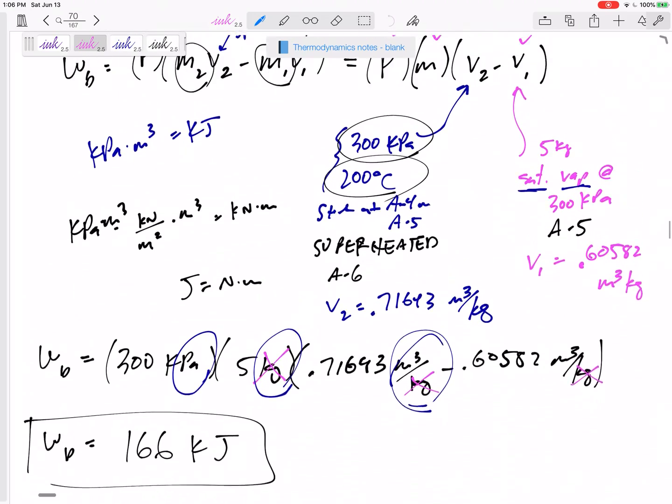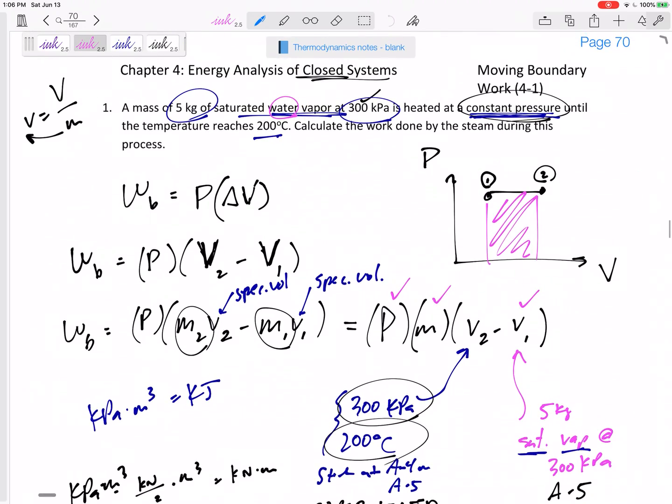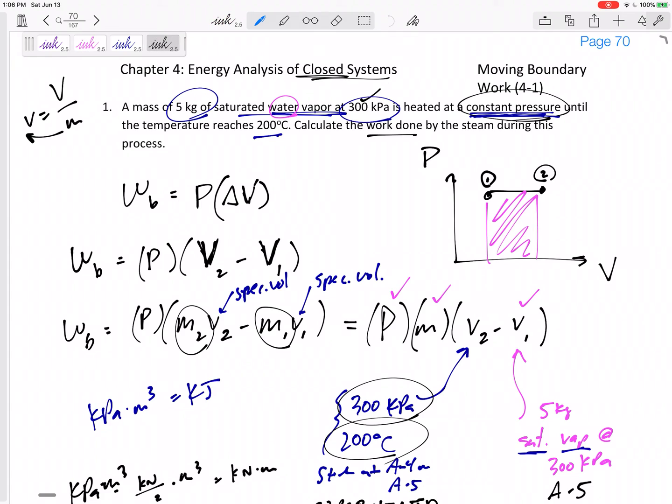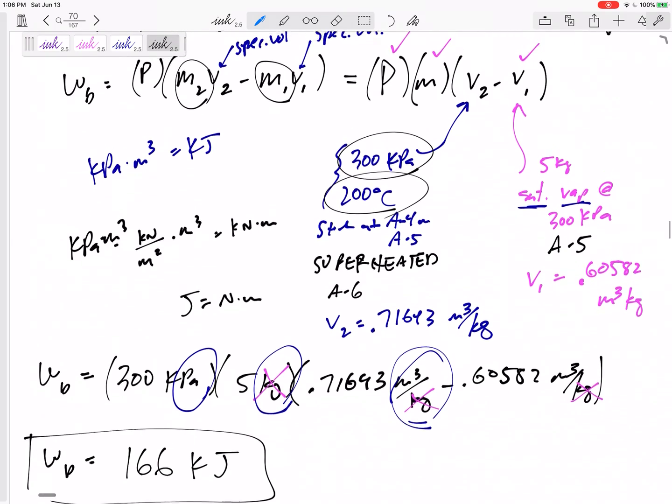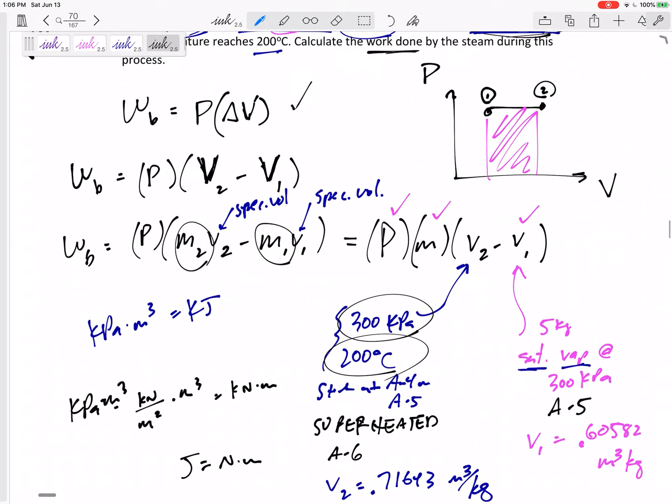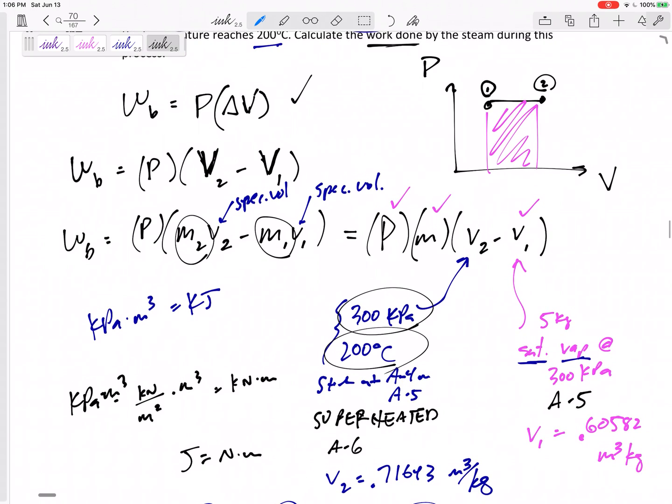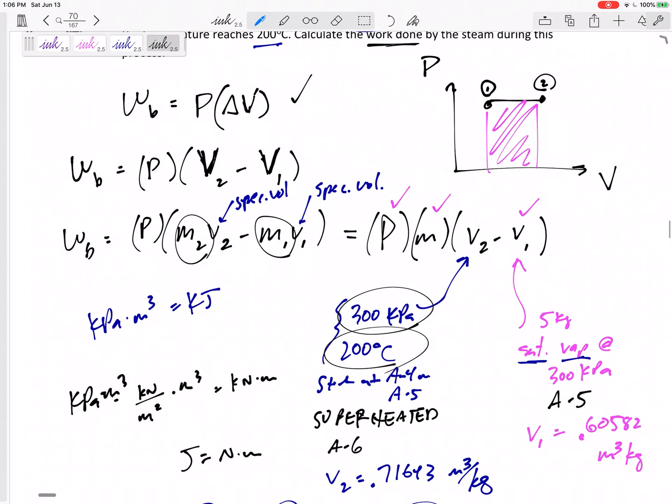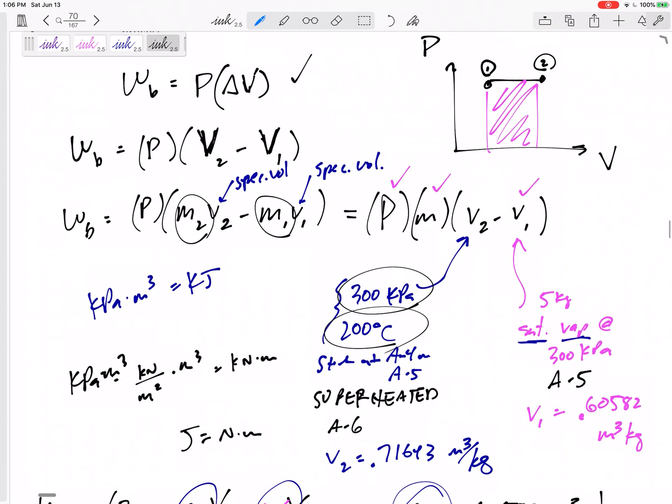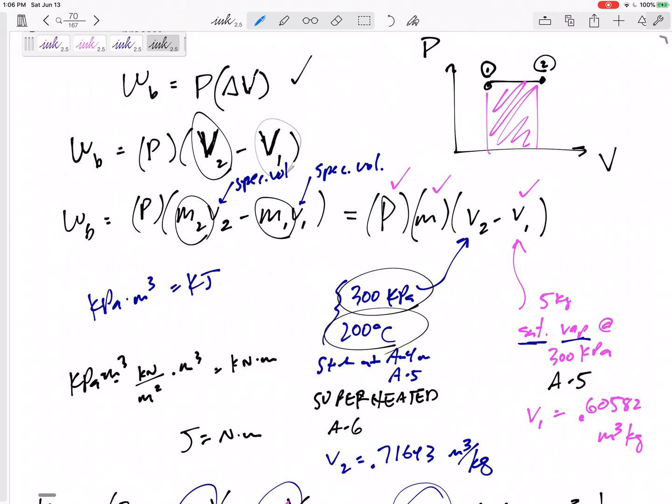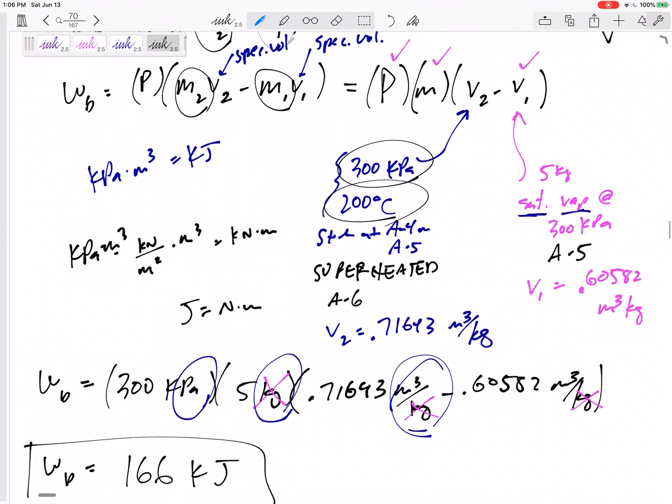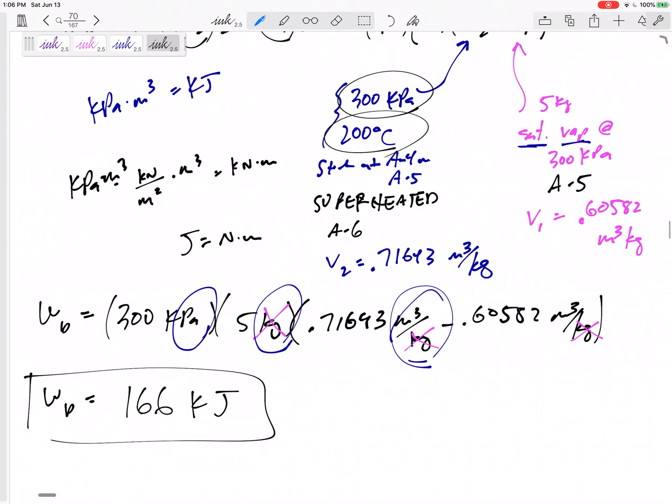No other work done. It didn't say anything else about other work, so the only work is the boundary work. We've got an equation for boundary work for a constant pressure process. In order to get these volumes, we had to use specific volumes from property tables. Let's look at another one.